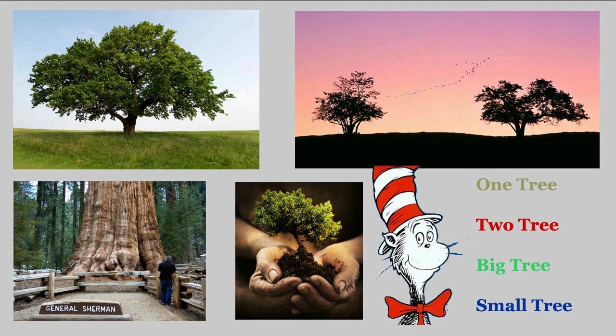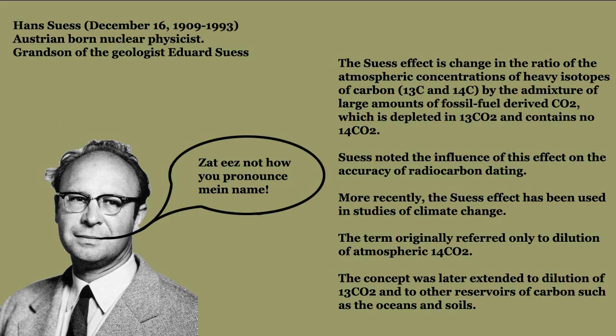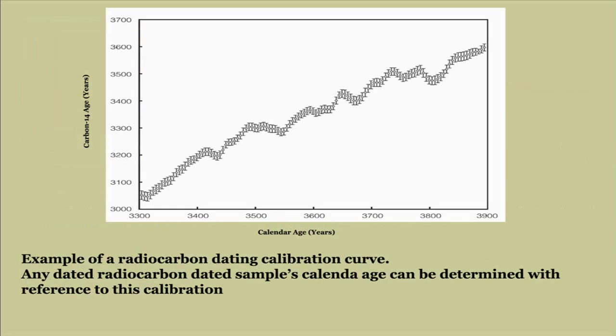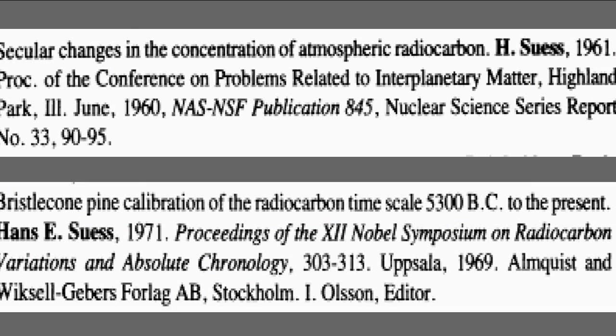Enter Han Suess. Suess decided to test Libby's assumption that atmospheric C14 levels had not changed over time, using tree rings. At that time, Suess had access to a fully anchored bristlecone pine tree ring chronology of 7,000 years. By carbon-dating the samples from the present back to 7,000 years, he could produce a more accurate curve of knowns than Libby had. Suess was aware that a Dutchman, de Vries, had published work in 1958 and 1959, stating that similar work on European trees had indicated C14 atmospheric values had varied historically. De Vries' involvement in the area diminished somewhat after he committed murder and suicide in that order in 1959. But Suess published data back to 3,000 years in 1961 and extended it back to 7,000 years in 1969.